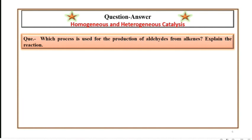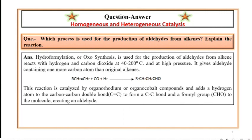Which process is used for the production of aldehydes from alkenes? Explain the reaction. Hydroformylation, or oxo-synthesis, is used for the production of aldehydes from alkenes. It reacts with hydrogen and carbon dioxide at 40-200°C and at high pressure. It gives aldehyde containing one more carbon atom than original alkenes. The reaction is shown here. This reaction is catalyzed by organorhodium or organocobalt compounds and adds a hydrogen atom to the carbon-carbon double bond to form a C-C single bond and a formyl group (CHO) to the molecule, creating an aldehyde.